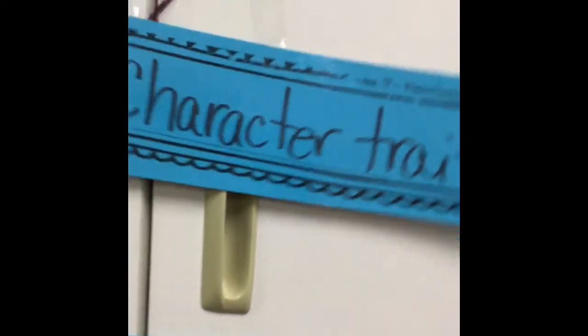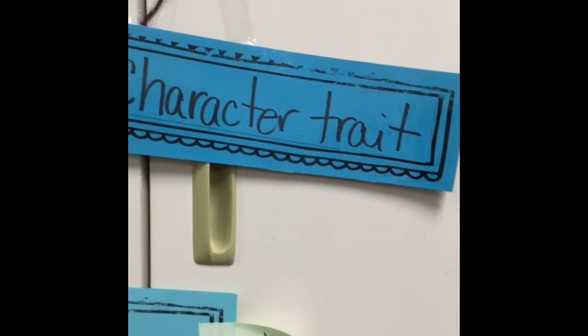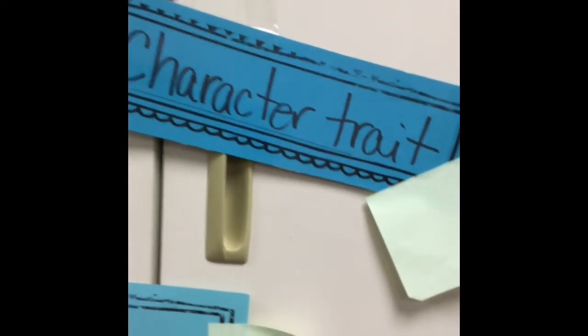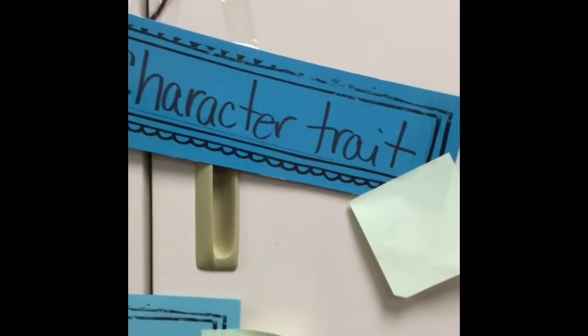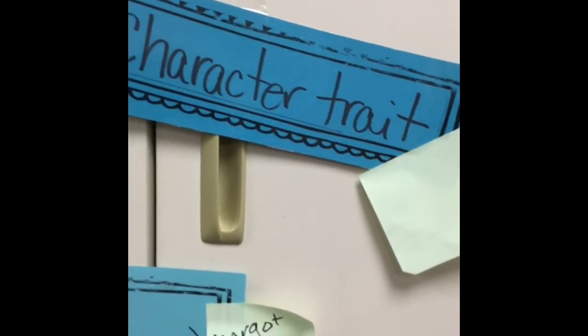For our character trait, we decided that Margo was shy. So we need to find the very first sentence that lets us know that she's shy, and you're writing down this exact sentence word for word from what the author wrote, for each of these examples.